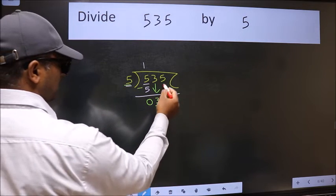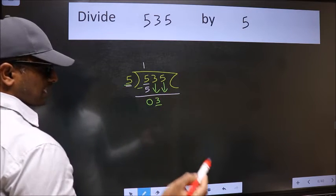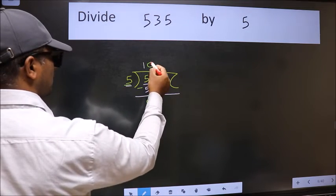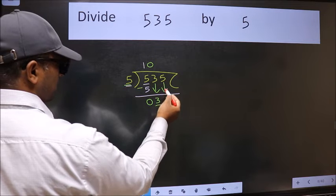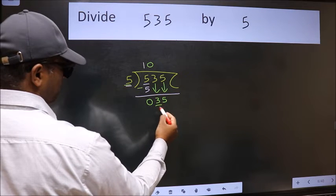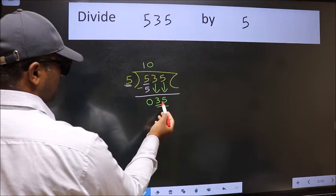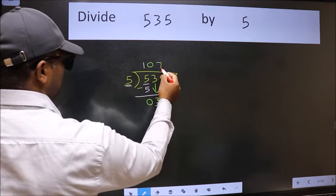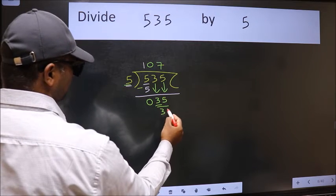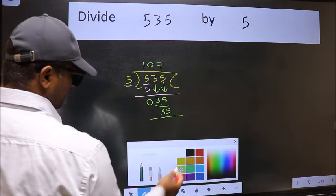The rule to bring down the second number is we should put zero here, then only we can bring this number down. Now 35. When do we get 35 in the 5 table? Five sevens 35. Now we should subtract.